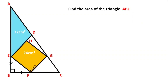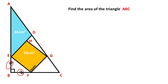In this video we have one right triangle, one square, and the value of the blue shaded triangle is given as 32 cm squared, and the value of the square is given as 24 cm squared. These two parts are given as equal. The question is: what is the value of the triangle ABC?